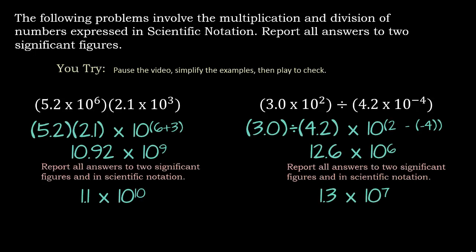So let's look at our answers. The first one I multiplied 5.2 times 2.1 and I added their exponents. But we need to report all the answers to two significant figures and in scientific notation. So the first thing I did was change it to scientific notation. So I have 1.092 times 10 to the 10th because I moved one place. And then I only get two significant digits. So I had to round. So I'm actually looking at the 9 here. So I ended up with 1.1 times 10 to the 10th. So that's how I got that answer.